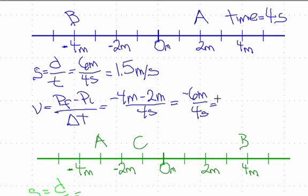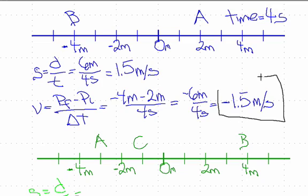So we have a velocity of minus 1.5 meters per second. As I pointed out earlier, negative velocity does not mean we're slowing down — negative velocity means we went in the negative direction, and that's all.